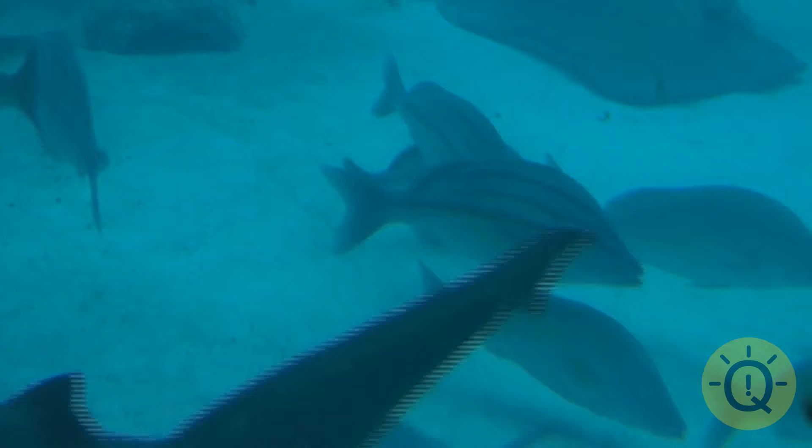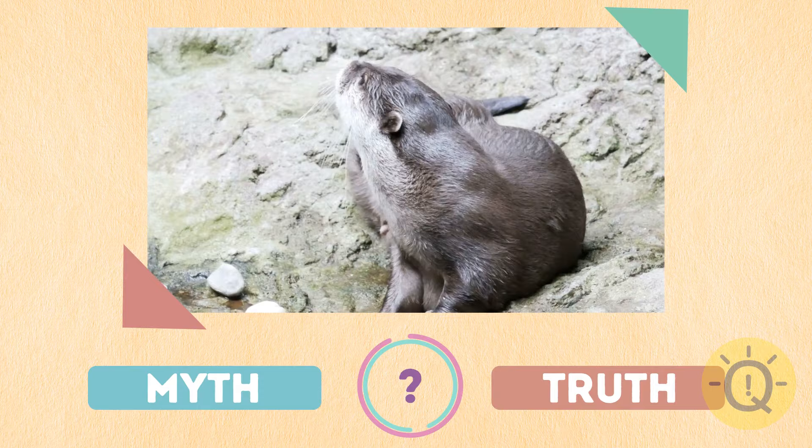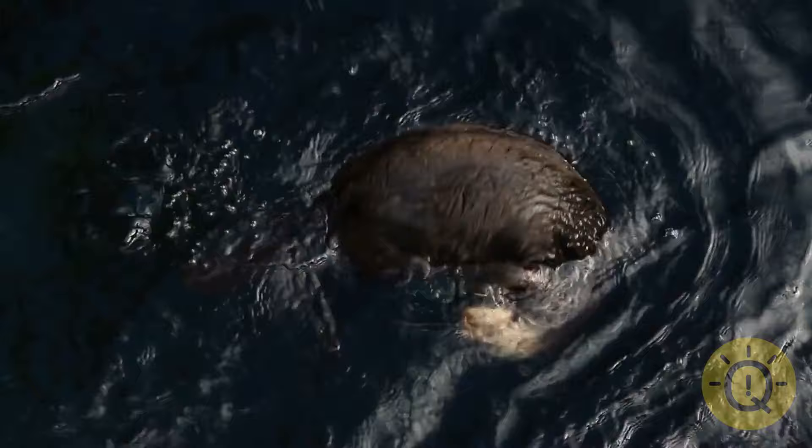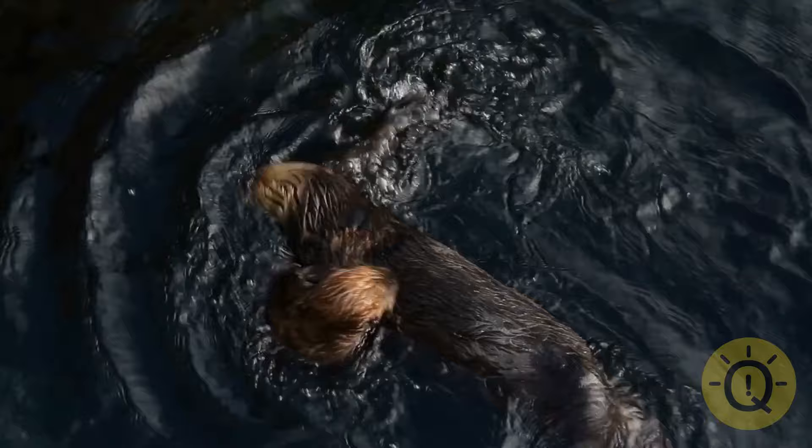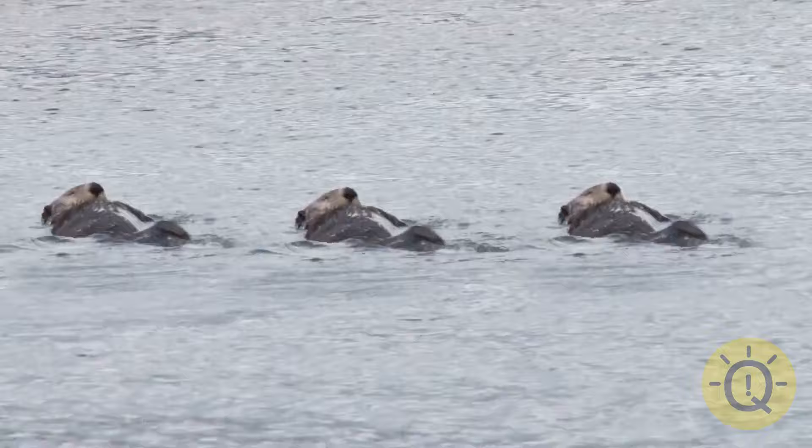Sea otters hold hands so they don't drift apart while sleeping. Can you believe that? Yep, it's true. You can keep awing at it, but in fact, this way of sleeping has a practical purpose for them. Scientists suggest that sea otters develop this cute habit to stay close with their mating partners. If you hold your otter girlfriend's hand tightly all night, it will reduce the risk of her mating with another male while you're sleeping. Also, holding hands helps otters to protect themselves from predators because they stay away from the land altogether.